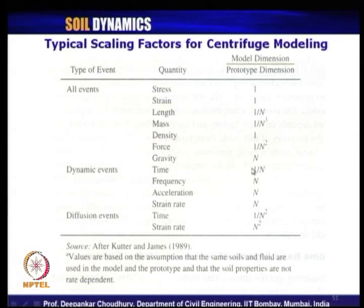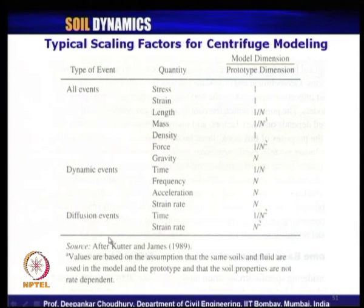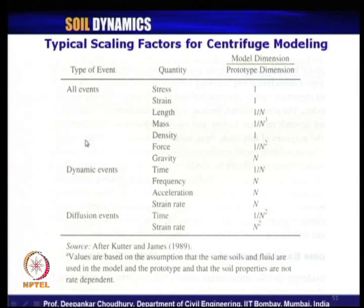Acceleration scales n times in the model — another major issue. If the prototype site experiences a peak earthquake acceleration of 0.2G, at 30G rotation you must provide 6G acceleration to the model, though it will not lift up because the sample is already spinning at 30G. Strain rate also scales n times from prototype to model. These are the scaling formulas proposed by Bruce Kutter and James in 1989 — Kutter being the lead professor in charge of the UC Davis dynamic centrifuge facility.